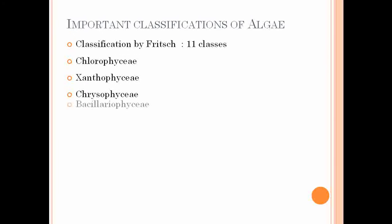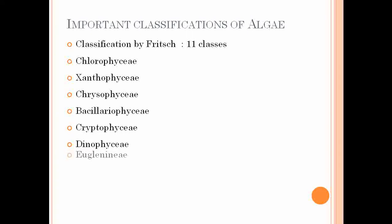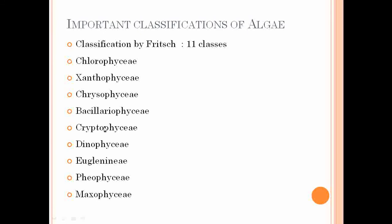The first system of classification for Algae was proposed by scientist Frisch, who divided Algae into 11 classes: Chlorophyceae, Xanthophyceae, Charophyceae, Bacillariophyceae, Cryptophyceae, Dinophyceae, Euglenaceae, Phaeophyceae, and Myxophyceae. These classes are based on the type of chlorophyll pigments present.